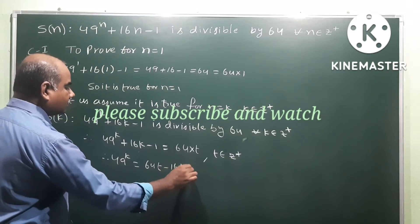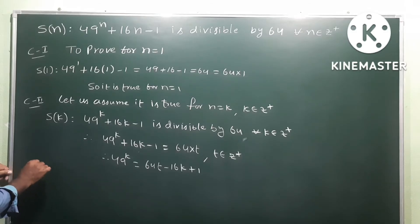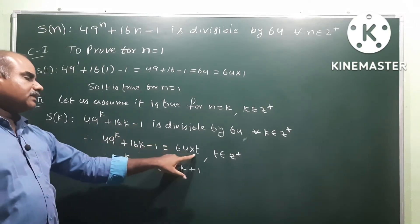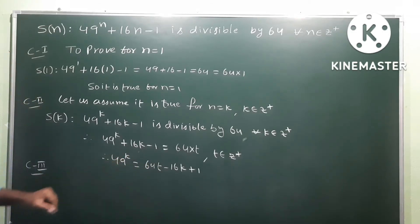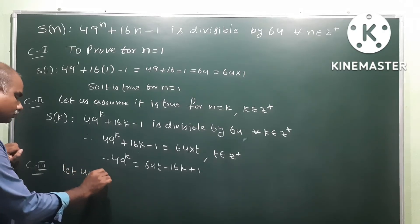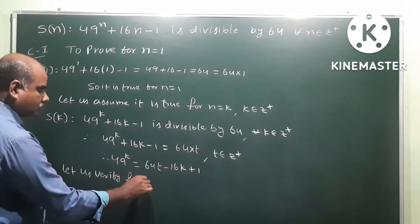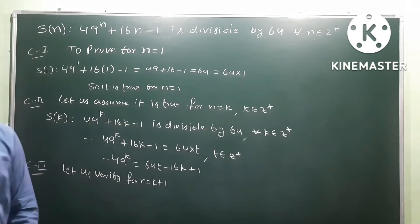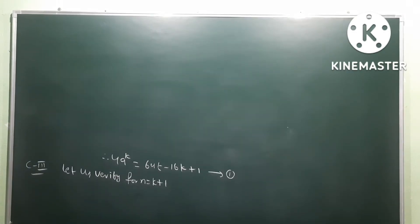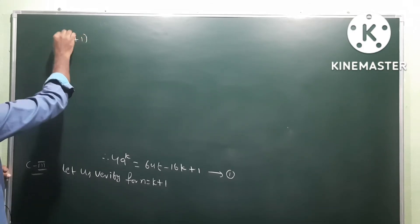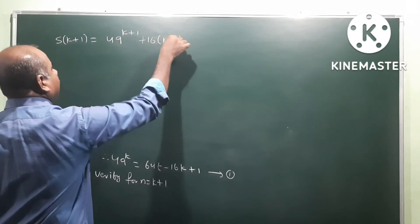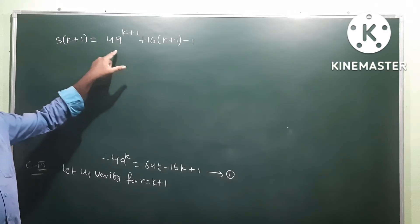Case 3: We need to prove the statement for n = k + 1. Let us verify for n = k + 1. We take S(k+1): S(k+1) = 49^(k+1) + 16(k+1) - 1.